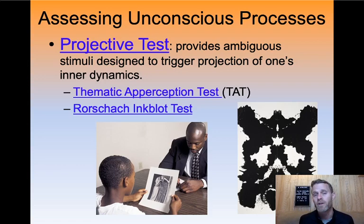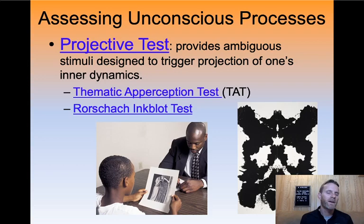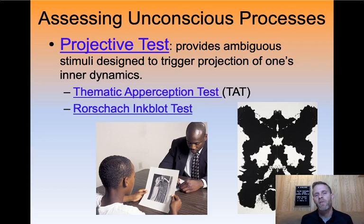The Rorschach inkblot test — you guys are familiar with it. They show you inkblots and basically say, what do you see? What we hope happens, if we're psychodynamic psychologists doing this projective test, is that the person starts to see things that are reflective of what they are feeling inside. We're supposed to ask additional questions from there as a therapist. But probably the more common one used today is the thematic apperception test, almost always abbreviated TAT. It shows a person or a situation where there's emotion being shown.